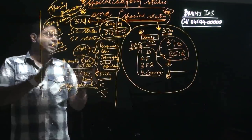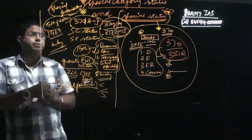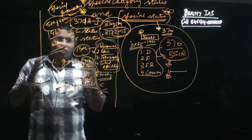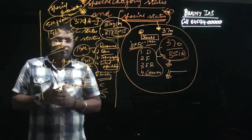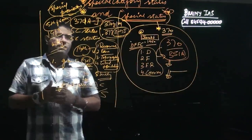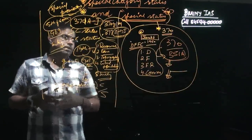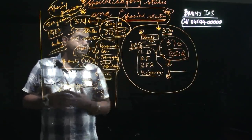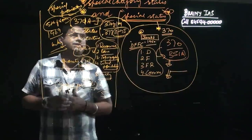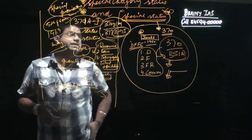In this class we learned basically three types of distinctions: the special provisions for various states that were part of the temporary and transitory phase, the special category status under Article 370, and the special category states.